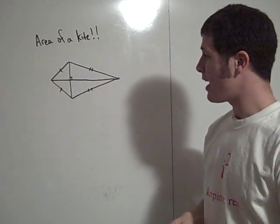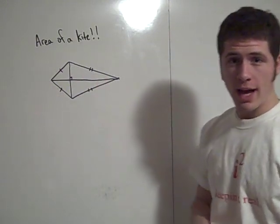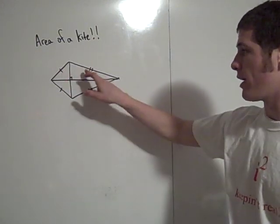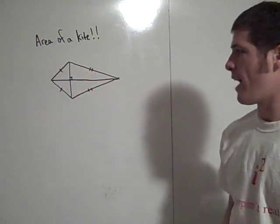So you can find the area of the kite by adding the area of these four triangles together. You can calculate each of these by using one half base times height.